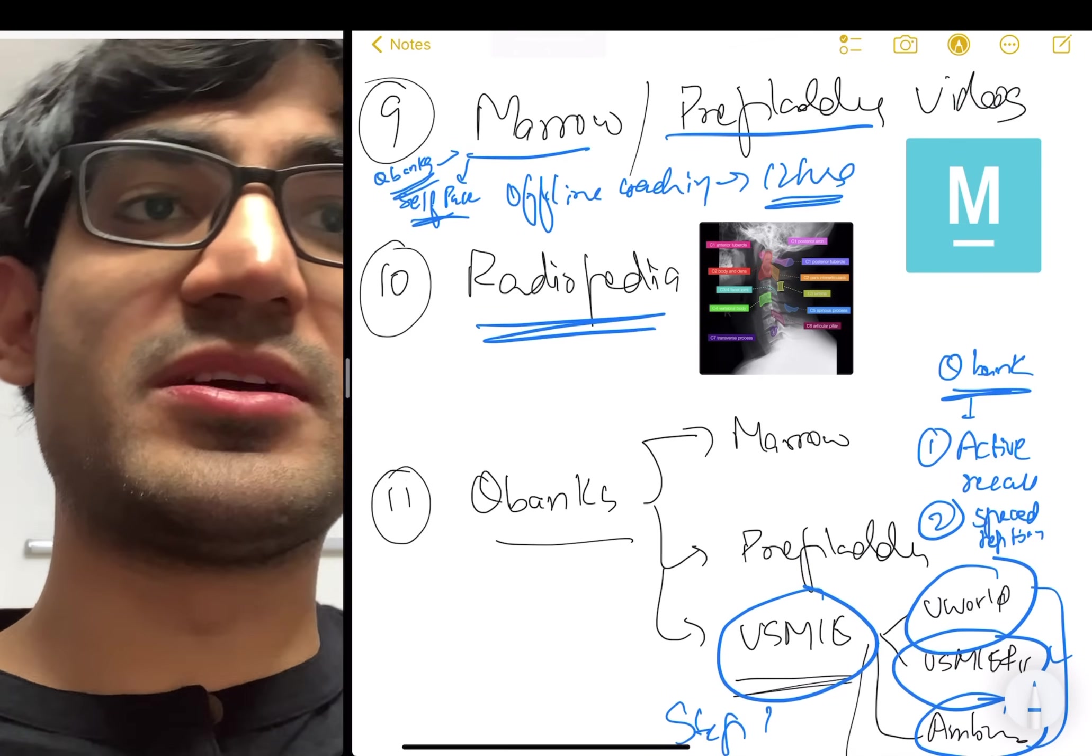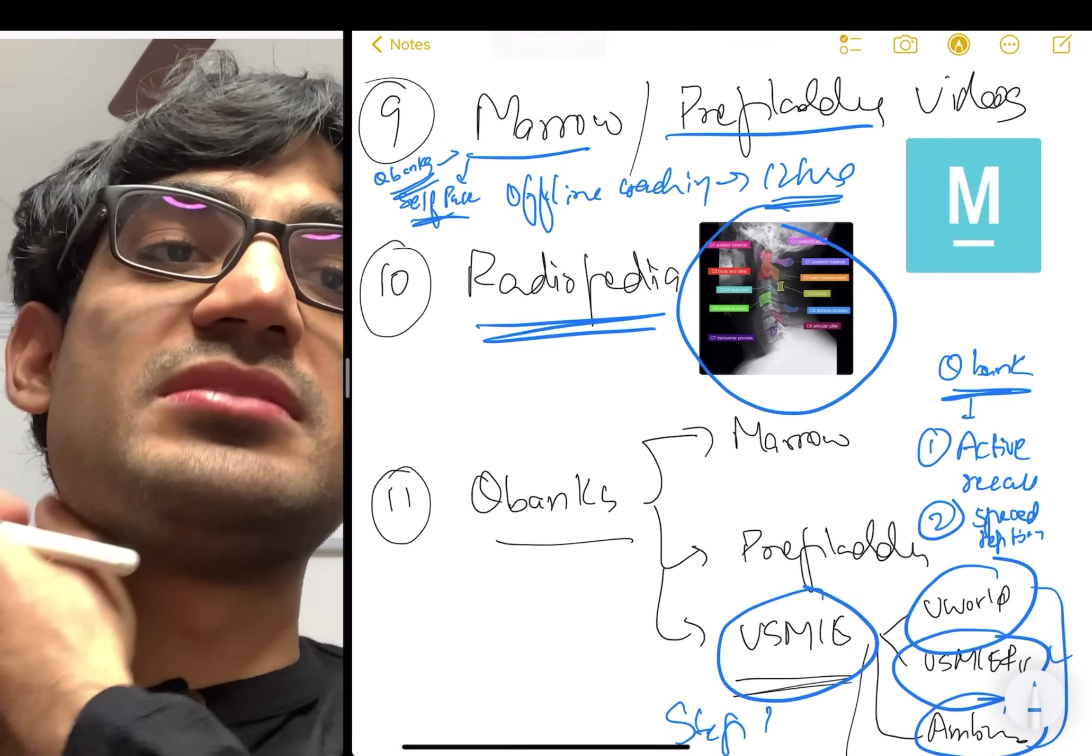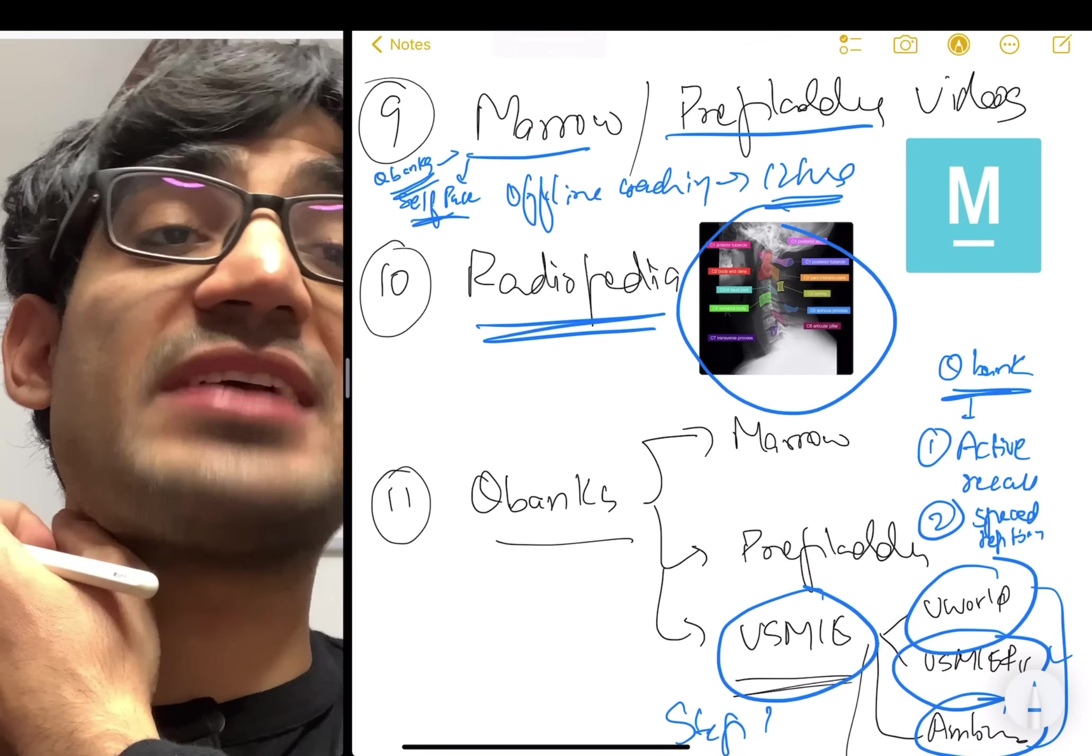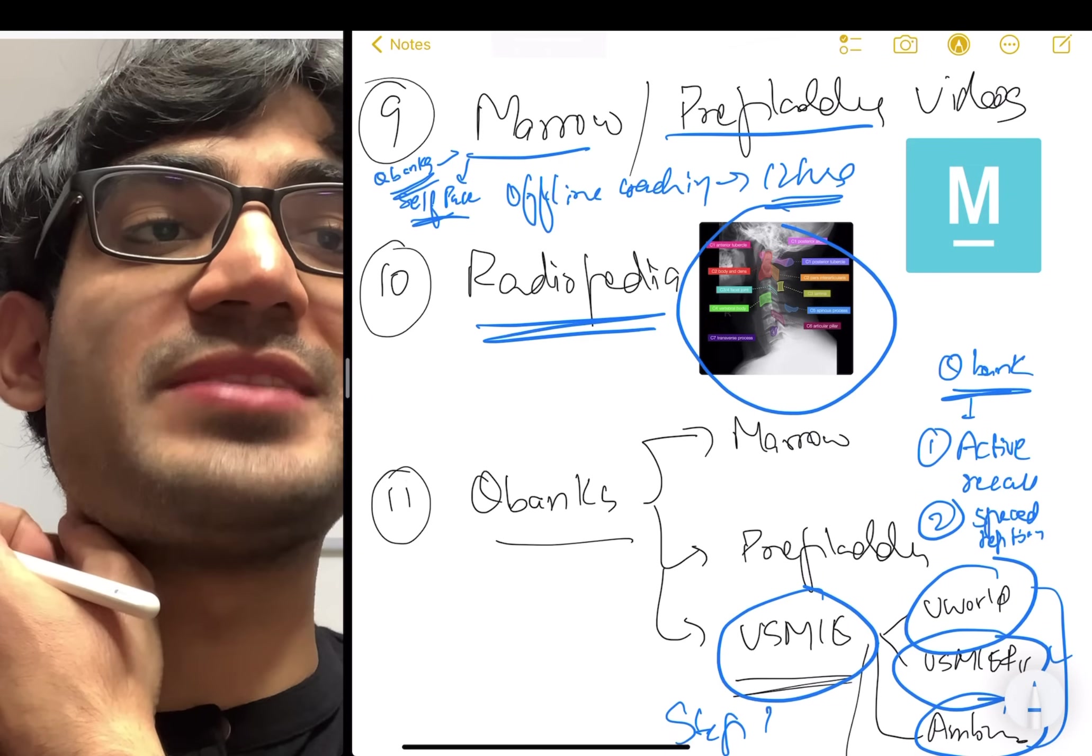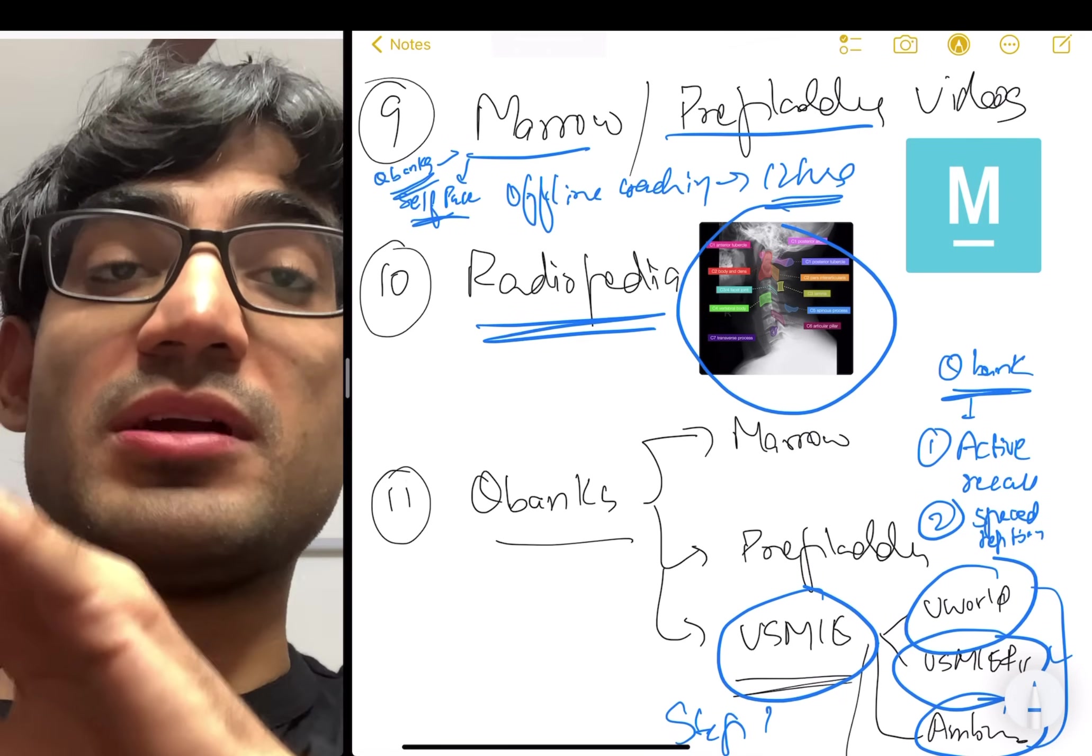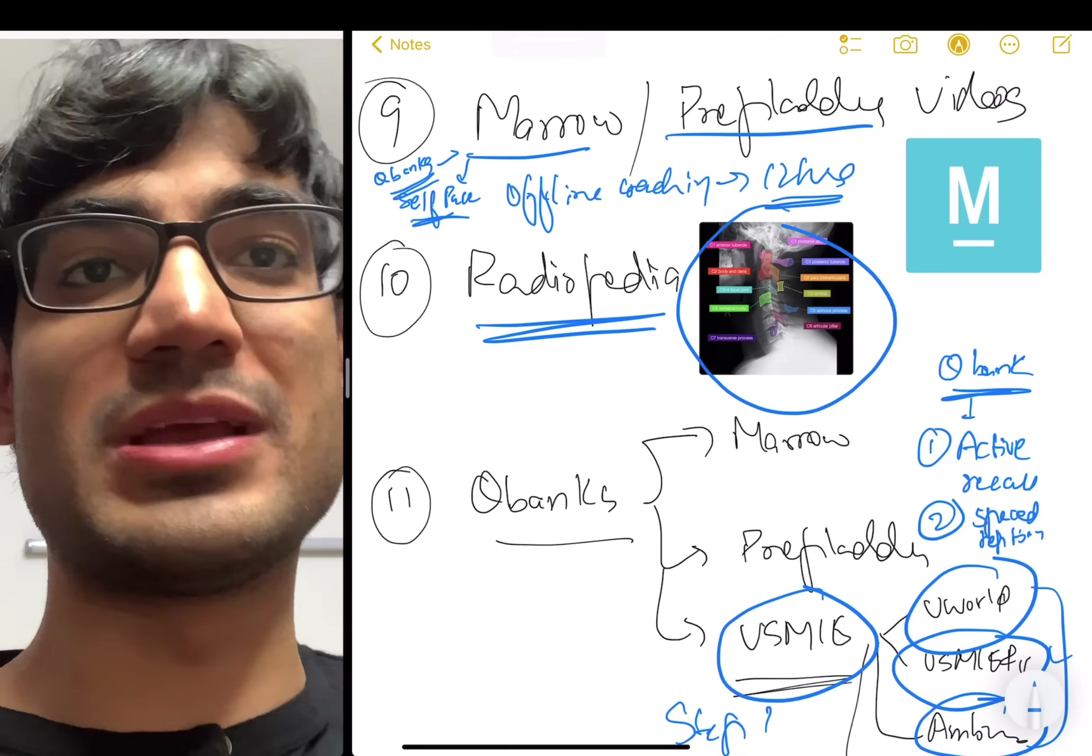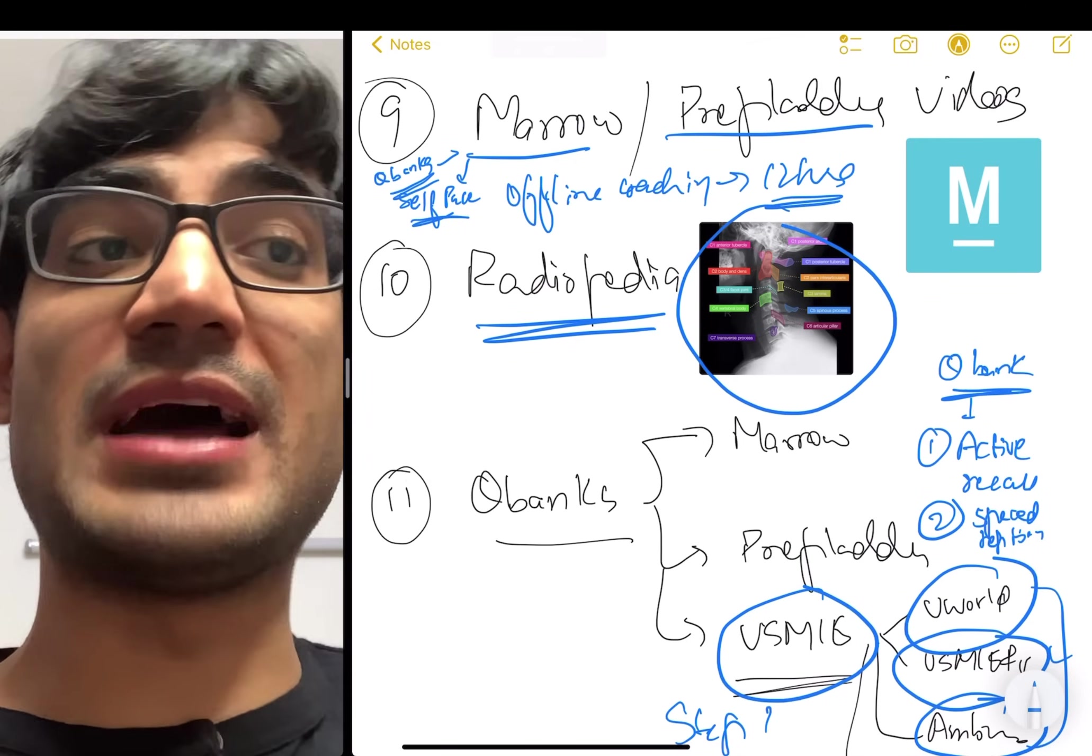The 10th resource I would recommend is Radiopedia. And you can see an image from Radiopedia. Radiopedia is just a collection of x-ray images, MRI images, all of that, so that you can correlate, let's say your anatomy, what you're learning with what is real life, x-rays, real life stuff, x-rays that you can use in medicine. So that's very helpful.